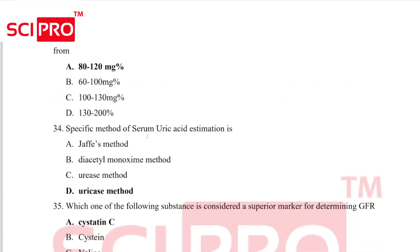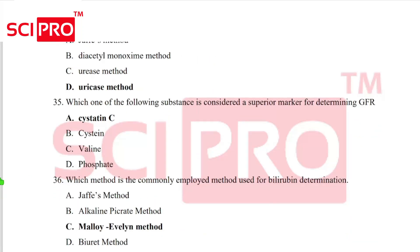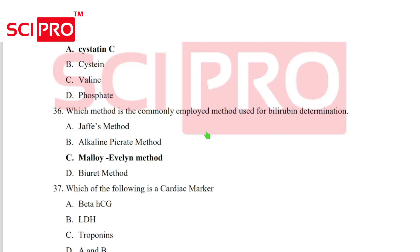Question number 34, specific method of serum uric acid estimation is uricase method. Question number 35, which one of the following substances is considered a superior marker for determining glomerular filtration rate? Cystatin C. Question number 36, which method is the commonly employed method used for bilirubin estimation? Malloy-Evelyn method.